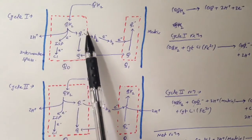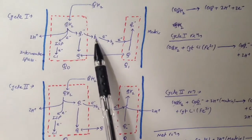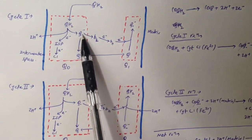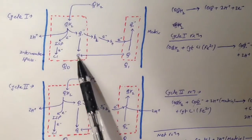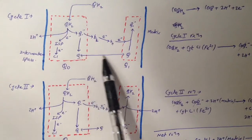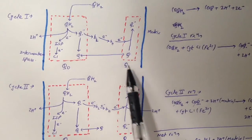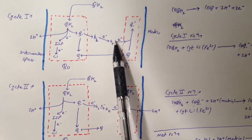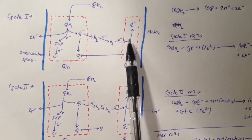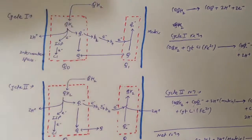The Q•⁻ gives its electron to cytochrome bL; cytochrome bL gives its electron to cytochrome bH. When Q•⁻ gives away its electron it becomes Q, and this Q then goes and binds to the Qi site. BH gives its electron to Q at the Qi site, and it becomes Q•⁻. That's cycle I.